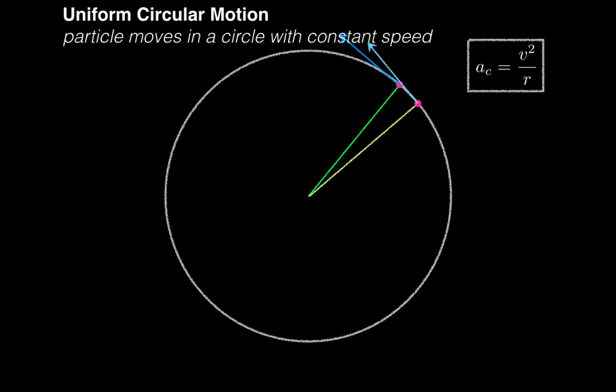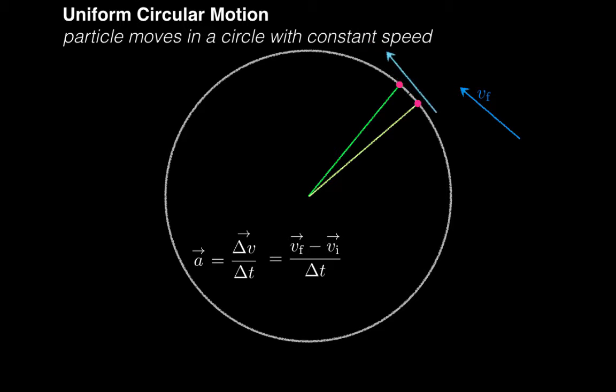The rest of this video is devoted to deriving this result. So, remember that average acceleration is defined as delta v over delta t. And also remember that delta v can be written as vf minus vi. Here's vf, and here's vi.